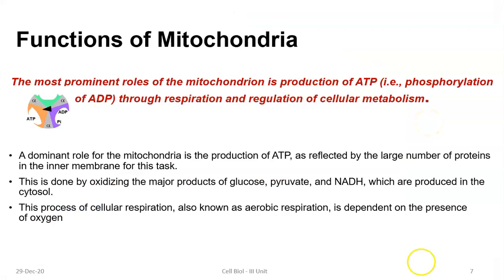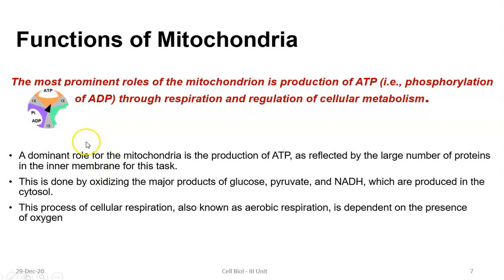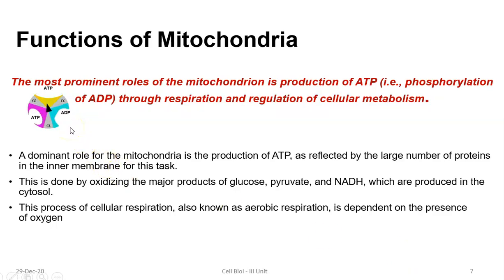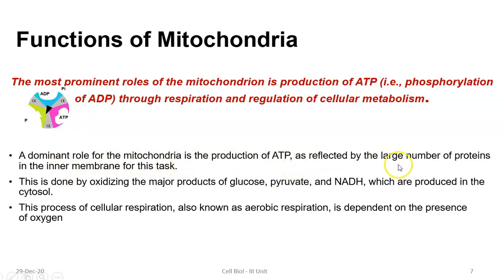Now we look at the formal explanation of mitochondrial functions. The first function, as already mentioned, is ATP production — ADP plus inorganic phosphate is phosphorylated to ATP. The dominant role of mitochondria is ATP production, which is reflected by the large number of proteins in the inner membrane dedicated to this particular task.